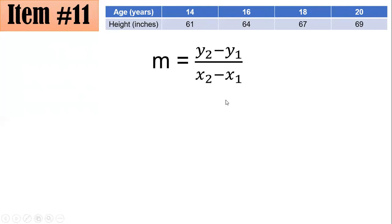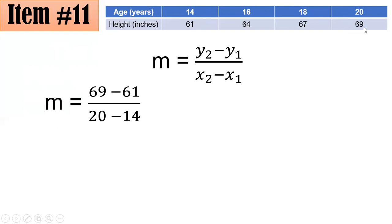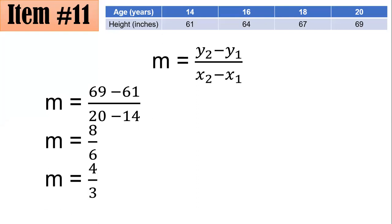For the slope, we compute the change in y over change in x: 69 minus 61 all over 20 minus 14. Simplifying the numerator gives 8, and the denominator is 6. So the slope is 8 over 6, which simplifies to 4 thirds. Hence, letter A is the correct answer.